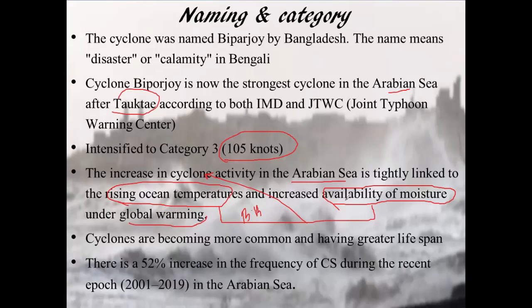When temperature and moisture rise, cyclonic activity and intensity also rise. Over the years, because of global warming, the Arabian Sea is becoming a warm pool of water, resulting in more intense cyclonic activity. Although majority of these cyclones move towards Pakistan, from 2001 to 2019 there has been a 52% increase in the frequency of cyclonic storms in the Arabian Sea.